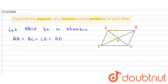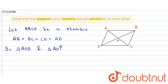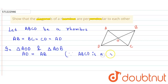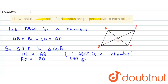Here we take the two triangles AOD and AOB and we try to prove that they are congruent. In triangle AOD and triangle AOB: AD = AB, because ABCD is a rhombus and in a rhombus all sides are equal. Also, AO = AO, as this side is common to both triangles.